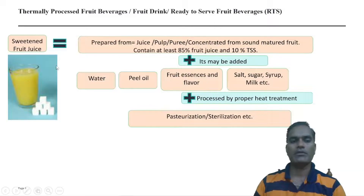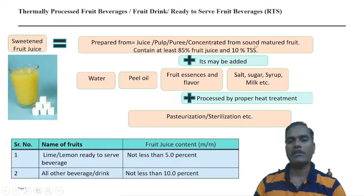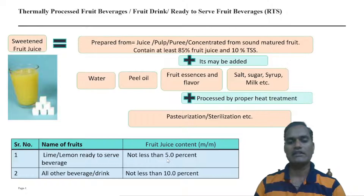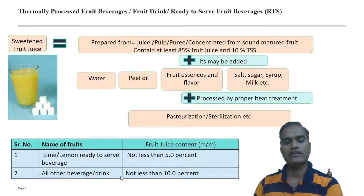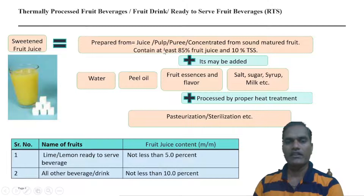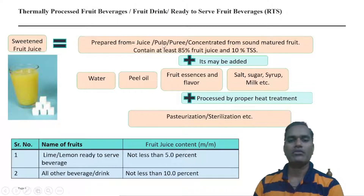These ingredients are added in proper proportion to achieve a final TSS of at least 10%, and they may be processed with thermal heat treatment. As per the regulations, the minimum requirement for citrus fruit juices like lime and lemon is a final Brix of 5%, and for other RTS beverages the minimum is 10% final Brix content. The food content is also subject to specific regulation — at least 85% prepared directly from fruit juice, pulp dilution, puree dilution, or concentrated fruit juice dilution.